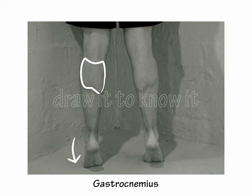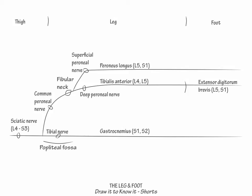Then include the tarsal tunnel, which is the medial entry zone of the tibial nerve through the ankle into the foot. Indicate that within the tarsal tunnel, the tibial nerve gives off the plantar nerves, which innervate the plantar intrinsic foot muscles, S1 to S3.